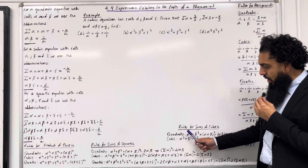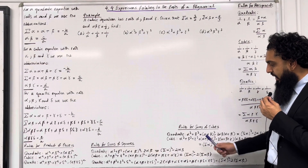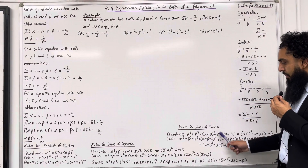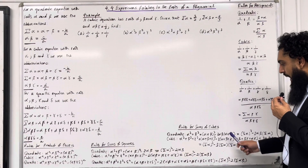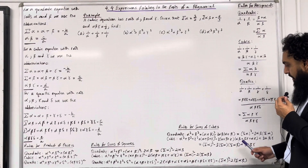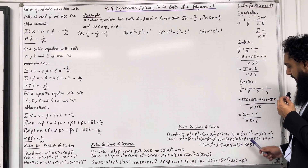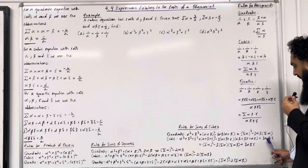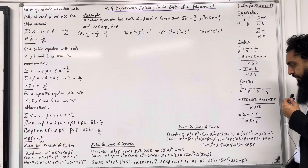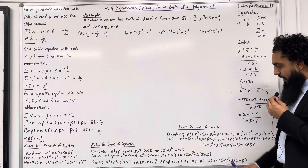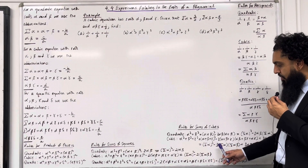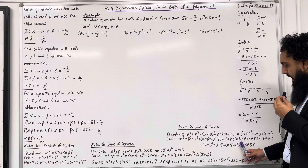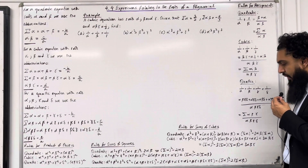For a cubic, alpha cubed plus beta cubed plus gamma cubed is equal to (alpha plus beta plus gamma) cubed minus three lots of (alpha plus beta plus gamma) multiplied by (alpha beta plus beta gamma plus alpha gamma), plus three lots of alpha beta gamma. This is the same as writing (sum of alpha) cubed minus three lots of sum of alpha multiplied by sum of alpha beta, plus three lots of alpha beta gamma.